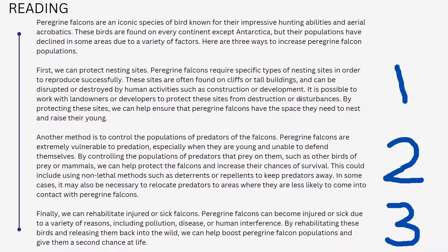Here's the problem-solution style. At the beginning of the reading, the author talks about the declining population of peregrine falcons and offers three solutions. First, protect their nesting sites. Next, control the populations of predators. Lastly, help the injured or sick falcons. So it's: introduction, solution one, solution two, solution three.